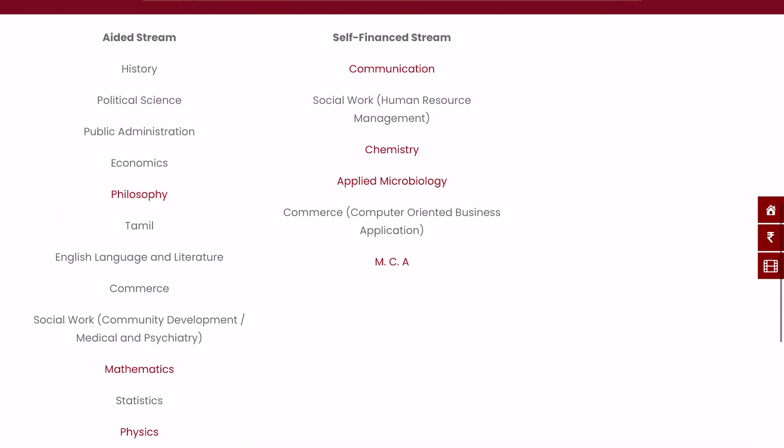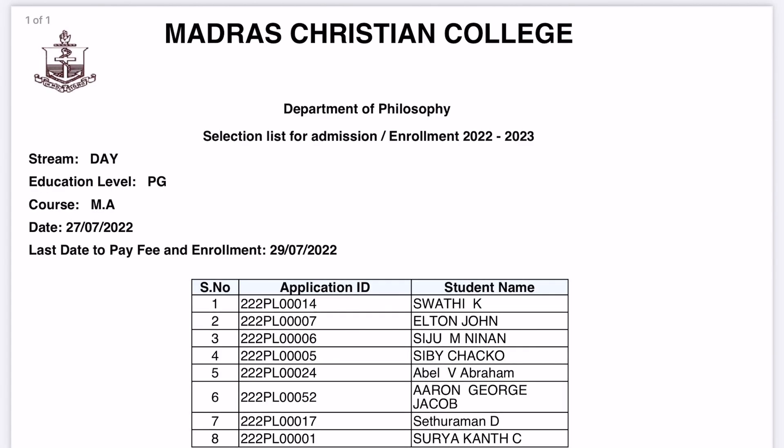For the courses which are in red color, the list has been released for those departments only, not for all departments. Soon the other department lists will come out, so no need to worry. If you click on, like, Philosophy here, you can see the selection list.